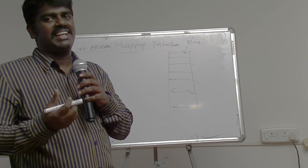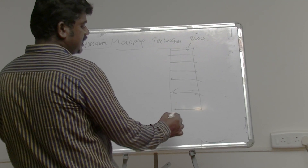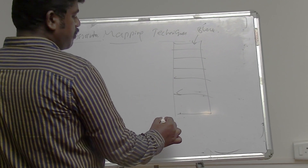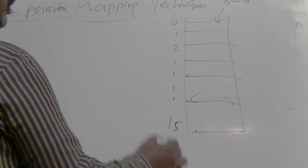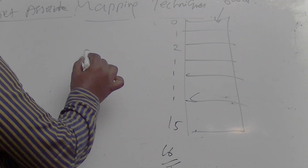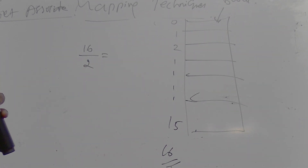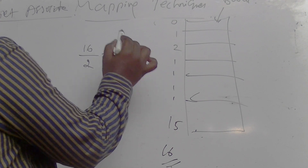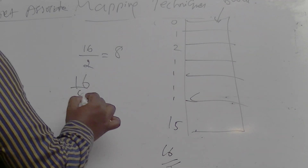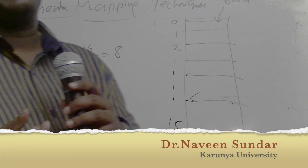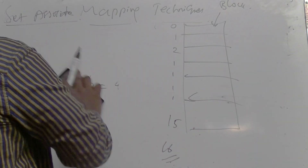To avoid the high cost of associative mapping, we use set associative mapping. Here we divide the cache lines into n number of sets. For example, if we have 16 blocks (0 through 15), a two-way set associative mapping gives 16 divided by 2, which is 8 sets. A four-way set associative mapping gives 16 divided by 4, which is 4 sets.